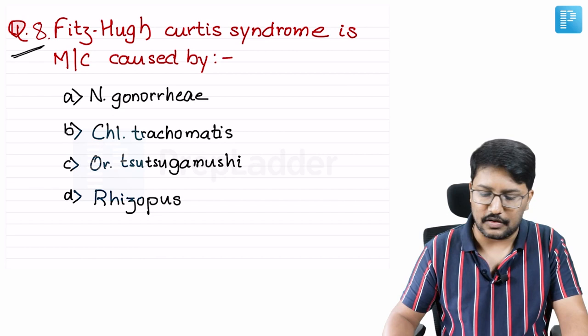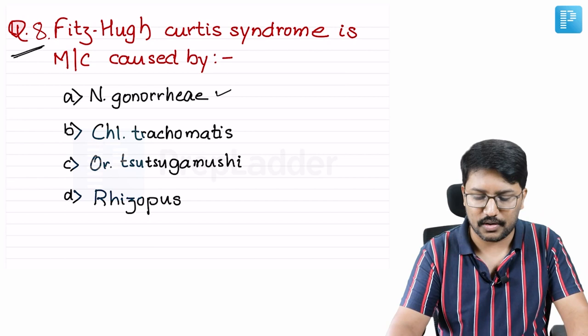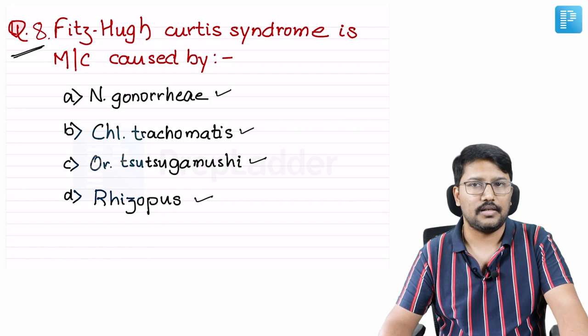Fitzhugh-Curtis syndrome - the question asks what is the most common organism. The options are N. gonorrhea, Chlamydia trachomatis, Orientia tsutsugamushi, and Rhizopus.